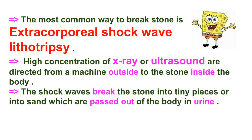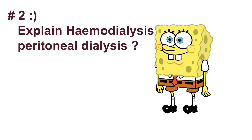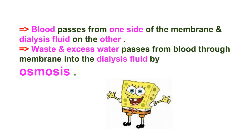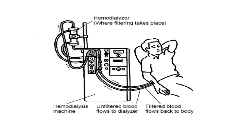These pieces are passed out of the body in urine. Question number two: explain hemodialysis and peritoneal dialysis. 'Hemo' means blood, from hemoglobin, so hemodialysis means cleaning the blood. Blood is circulated through a machine called a dialyzer. The dialyzer has two spaces separated by a thin membrane. Blood passes from one side of the membrane and dialysis fluid on the other. Waste and excess water passes from blood through the membrane into the dialysis fluid by osmosis.